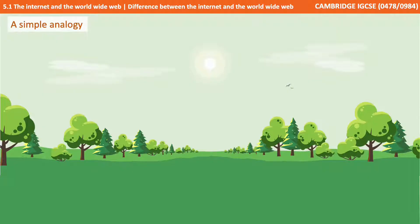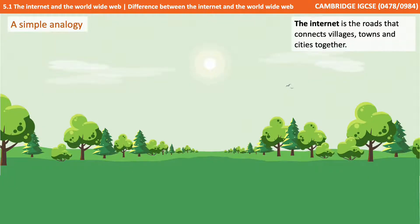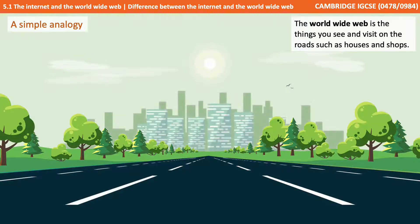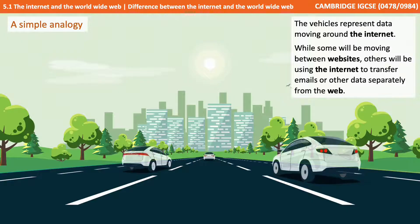Here's a simple analogy. We can think of the Internet as the roads that connect villages, towns, and cities together. The World Wide Web, therefore, becomes the things that you see and visit on those roads, such as houses, shops, and cinemas. The vehicles on those roads represent the data moving and travelling around the Internet. While some of these will be moving between websites, others will be using the Internet to transfer emails or other data completely separately from the World Wide Web.